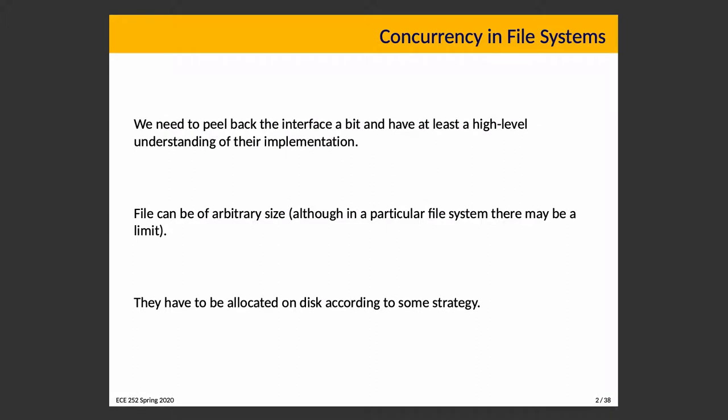There is a file system interface, and we know how to create, read, and write files. The operating system will do what we ask and deliver the data we requested. Now, we need to know a little more about what's going on. Files can be of arbitrary size, although a given file system may have a limit — for example, you might be unable to create a file larger than 4 gigabytes. Most of the time, a file can be any arbitrary size, and it has to be stored somewhere using some strategy.